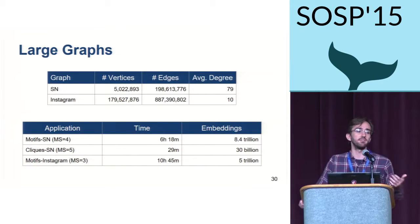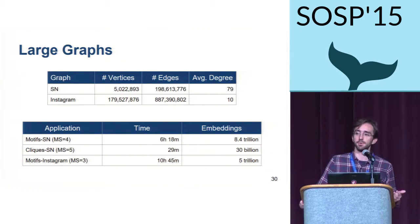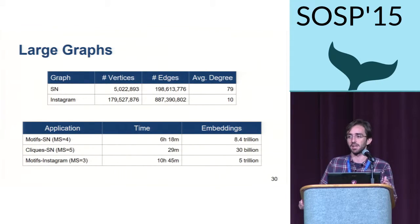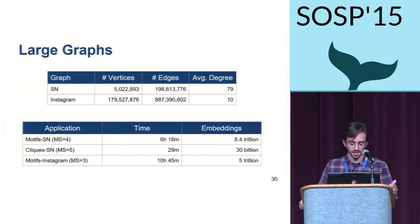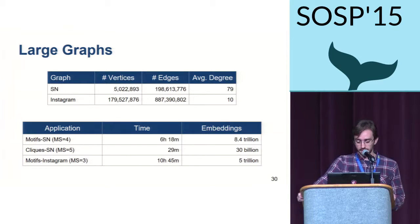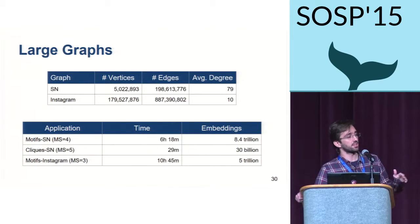Typical graph mining evaluations focus on very small graphs due to the exponential nature of the problem. We wanted to push Arabesque to its limits using two of our largest graphs: the SN and Instagram graphs with 200 million and 900 million edges respectively. We ran motif counting and clique finding on these graphs. Arabesque executed these algorithms producing execution times varying between 30 minutes for clique finding and close to 11 hours for motifs on the Instagram graph, processing more than 8.4 trillion subgraphs or embeddings of interest.